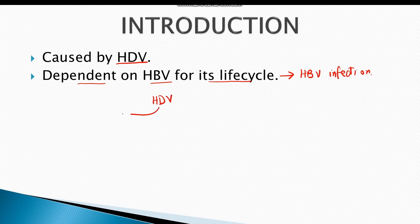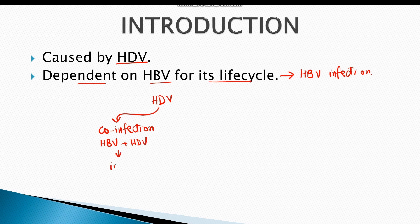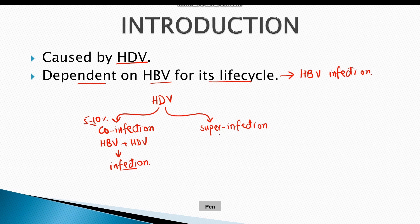Hepatitis D virus infection occurs as either co-infection, in which case hepatitis B virus and hepatitis D virus are together acquired by the serum resulting in infection. Co-infection occurs in almost 5 to 10% of cases. The other way is that hepatitis D virus causes a super-infection in pre-existing hepatitis B virus infection, which is more common and occurs in almost 90% of cases.